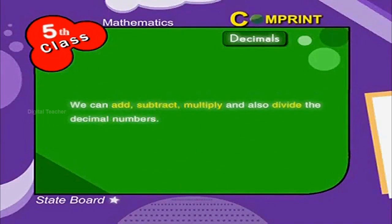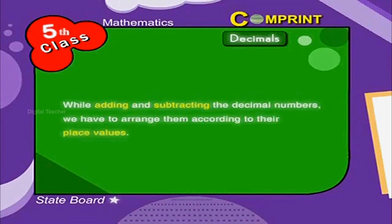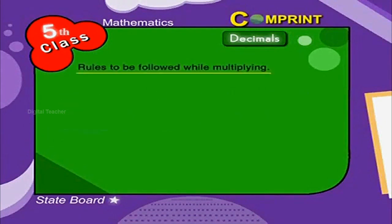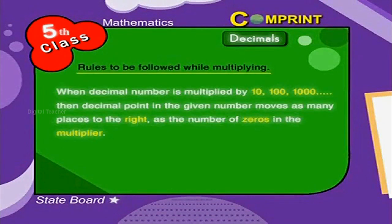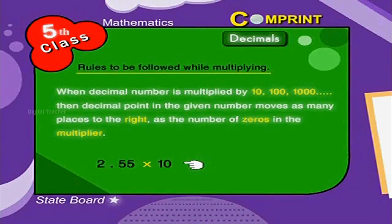We can add, subtract, multiply, and divide decimal numbers. While adding and subtracting, arrange numbers according to their place values. When a decimal number is multiplied by 10, 100, or 1000, the decimal point moves as many places to the right as the number of zeros in the multiplier. For example, 2.55 multiplied by 10 equals 25.5.